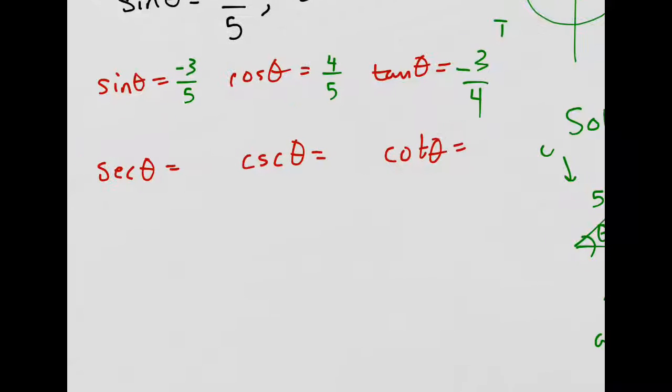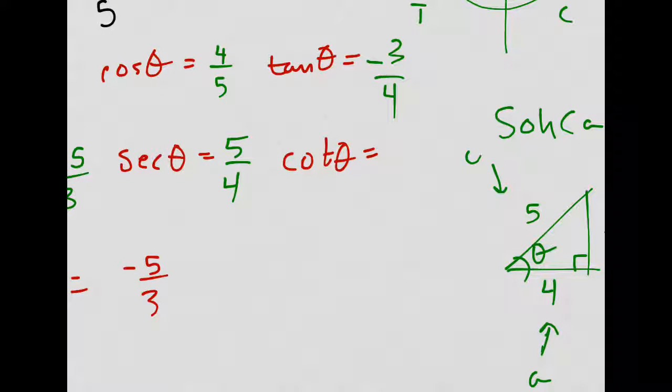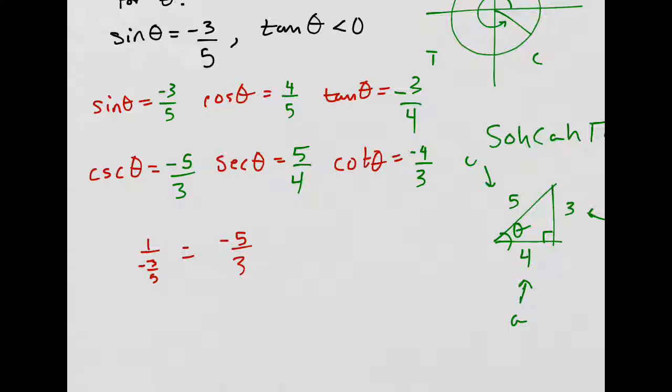Remember, cosecant is just 1 over sine. So if we had 1 over sine, that would be 1 over negative 3/5. Flip the second one and multiply - that's the same thing as negative 5/3. Secant is 1 over cosine, so that's just 5/4. I'm just flipping them over. And this one is negative 4/3. That's all you got to do.